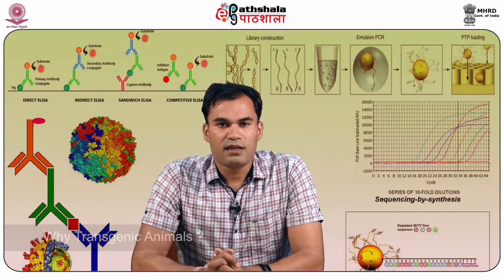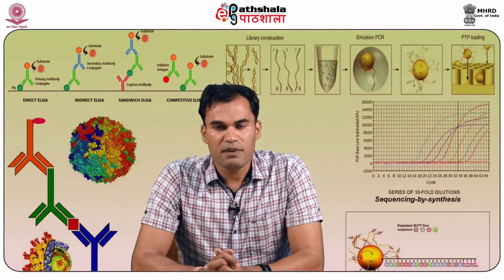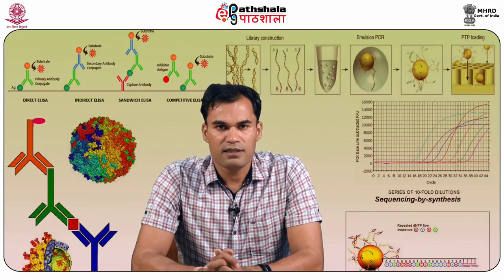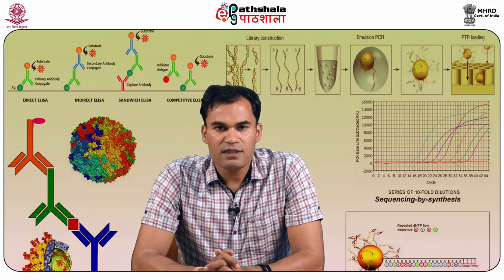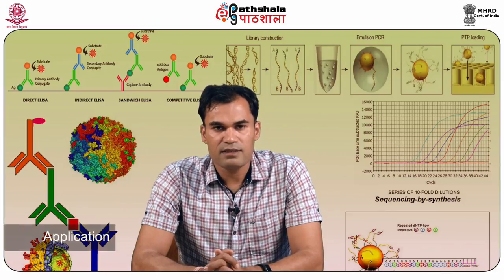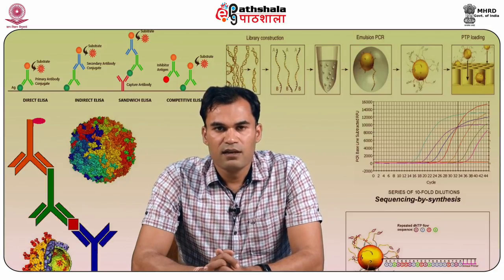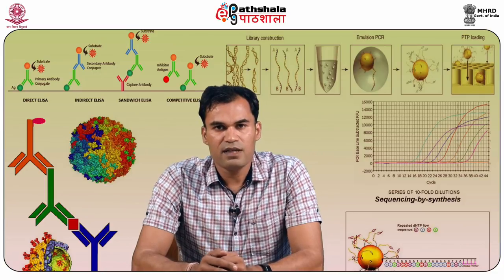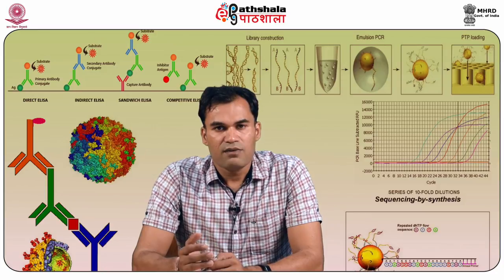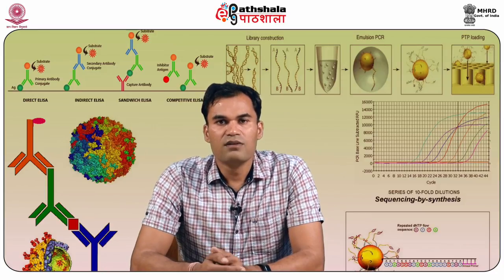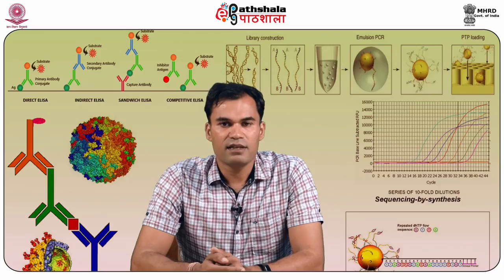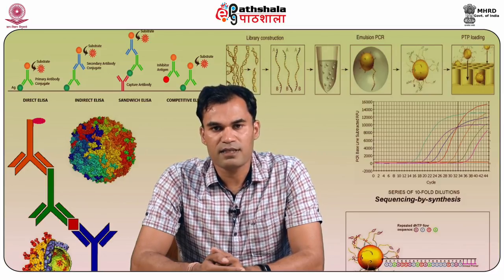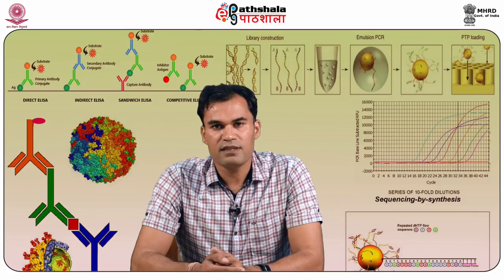Why transgenic animals? Transgenic animals are being created for the purpose of research and commercial interests. There are three types of research: academic research, application research and biomedical research. Under academic research, transgenic animals are used for the genetic regulation of development and growth. Under application research, they are used for the production of valuable drugs for animal and human welfare. For biomedical research, animal models and cell lines are generated for studying the pathogenesis and prevention of disease in humans.